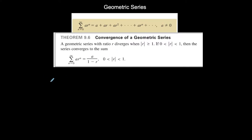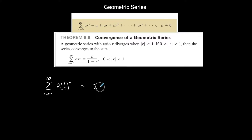An example of that could look like 2·(1/2)ⁿ. If I write out the first few terms, the first term starts at n=0: (1/2)⁰ is 1, times 2 is 2. The second term at n=1: (1/2)¹ is 1/2, times 2 is 1.